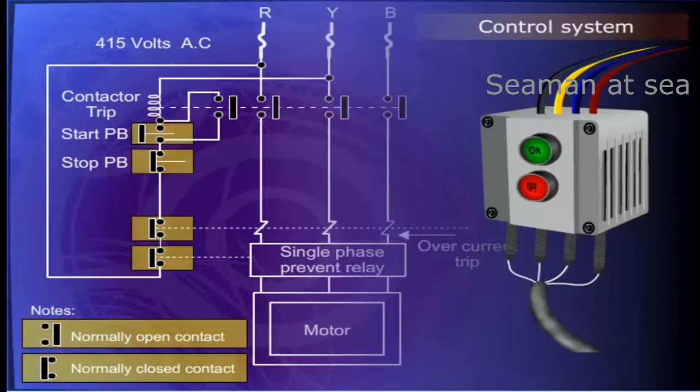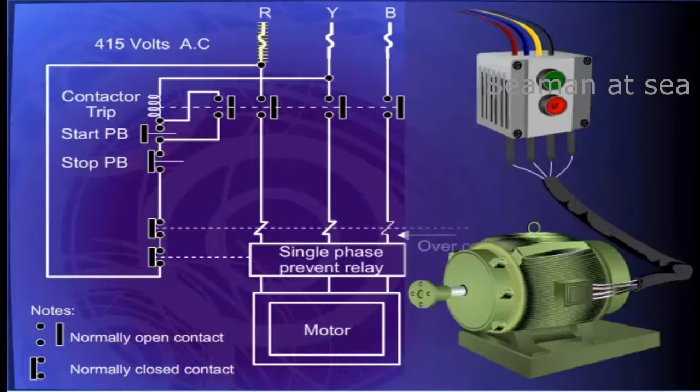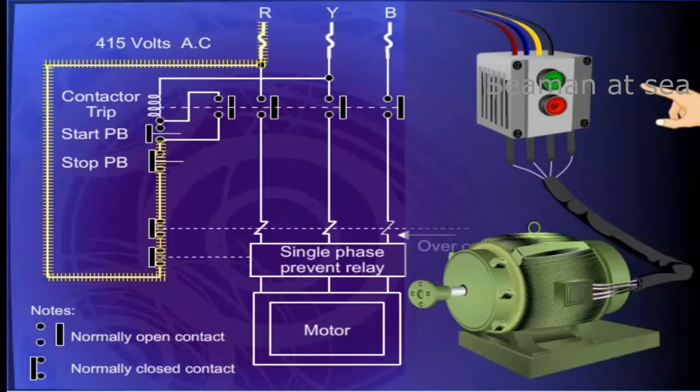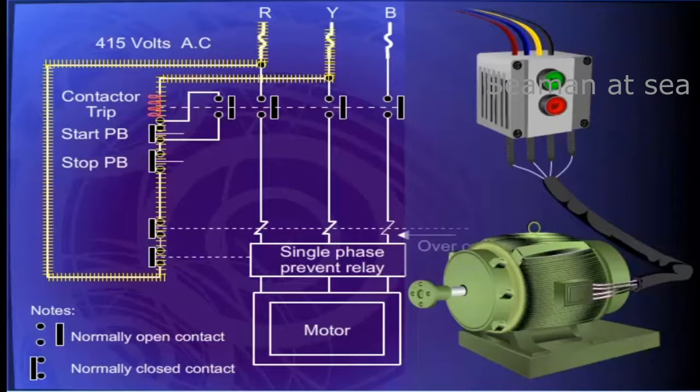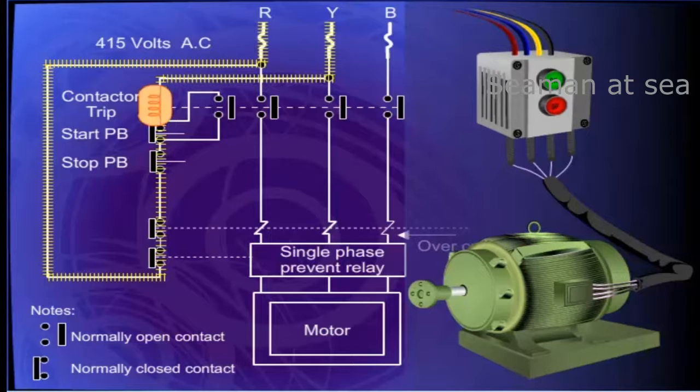The combinations of normally open and normally closed contacts will be according to the need in the control system. In order to start the motor, press the start push button and the contactor gets energized. Once energized, its contacts will close.